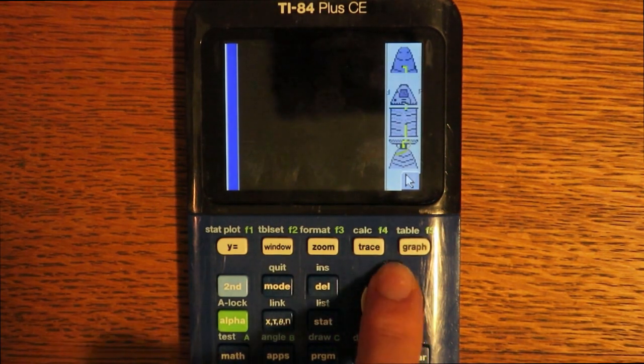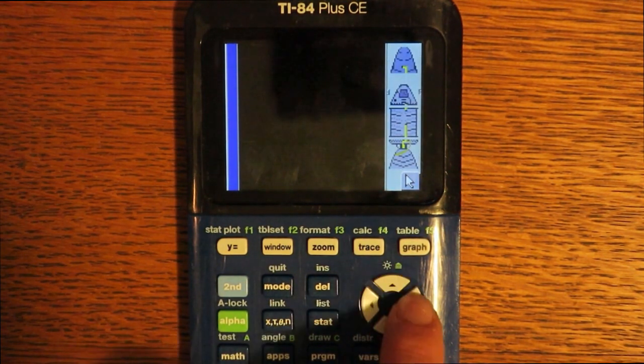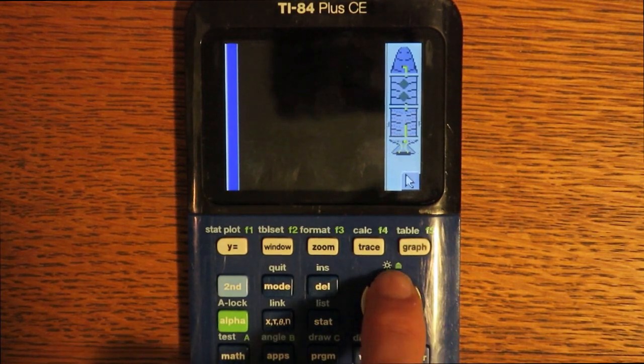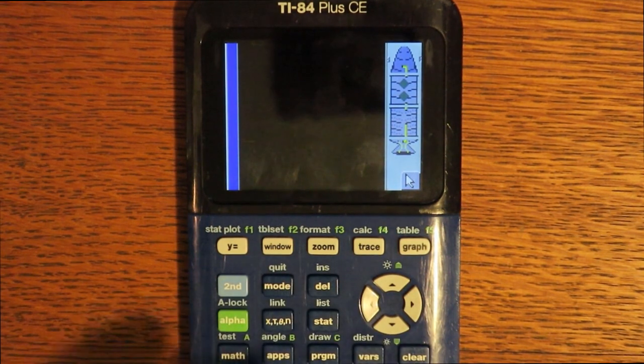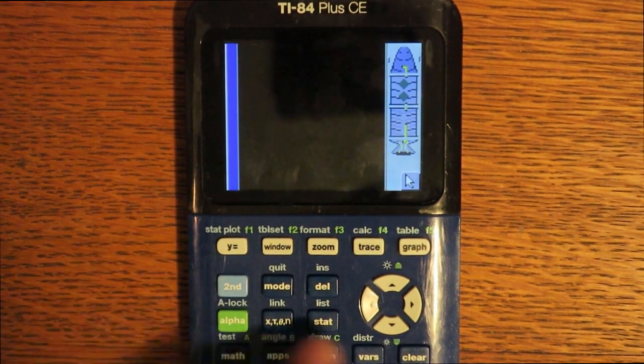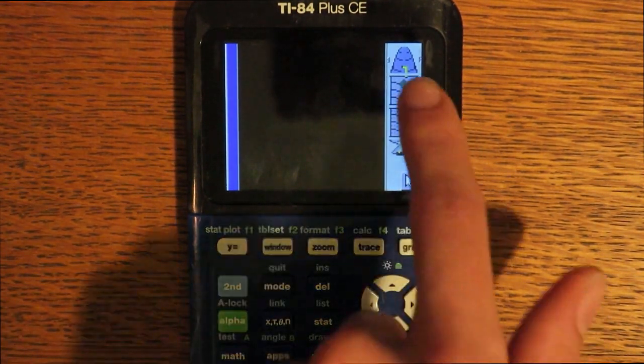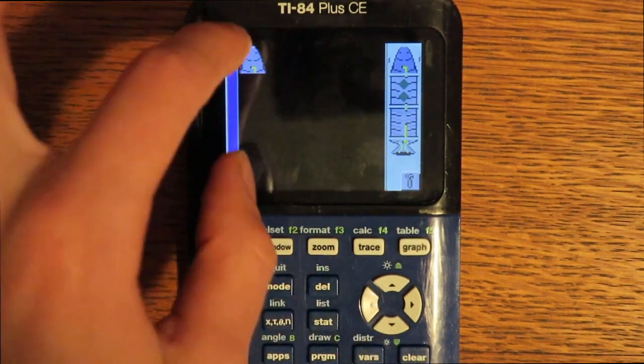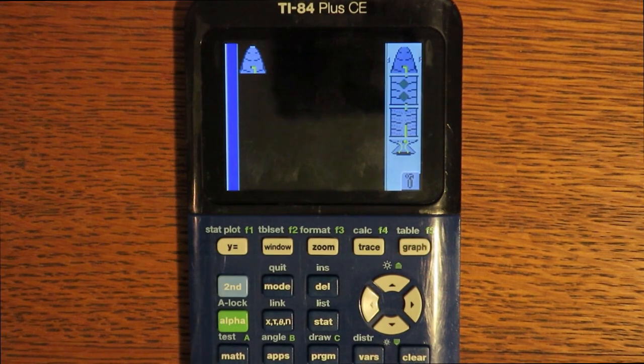And to select different versions of each part, use the left or right arrow keys. So to select a part, all you need to do is hover over the part you want to select, press second. It will now move it to the build area.